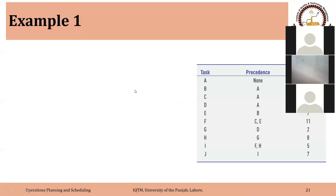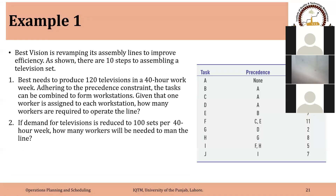Example one: Best Vision is revamping its assembly line to improve efficiency. As shown, there are 10 steps to assembling a television set. Best Vision needs to produce 120 television sets in a 40-hour work week. Adhering to the precedence constraints, the tasks can be combined to form workstations.